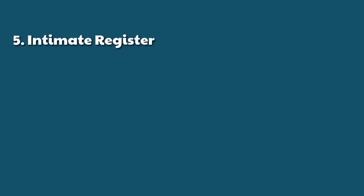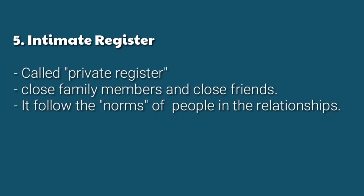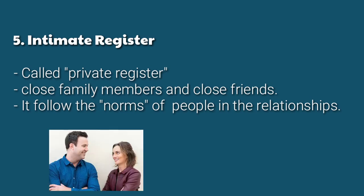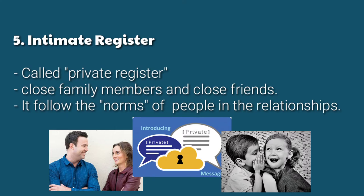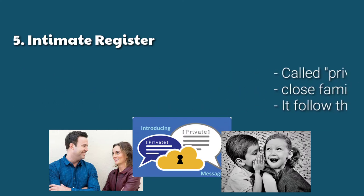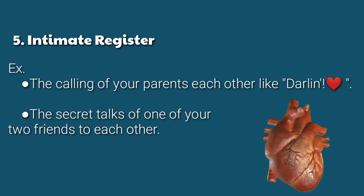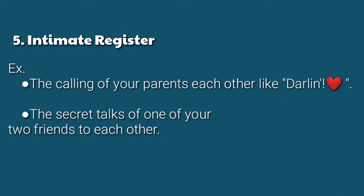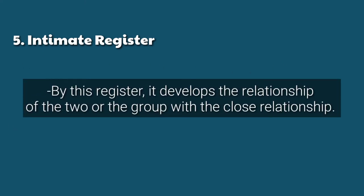Intimate register, sometimes called private register, is used in writing and speech with close family members and close friends. Just like casual register, it follows the norms of the people in their relationships. For example, the pet names parents call each other, like 'darling,' or the secret talks between two close friends. This register develops the relationship of two people or a group with a close relationship.